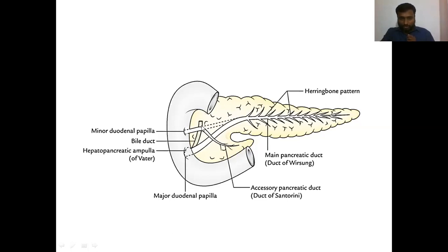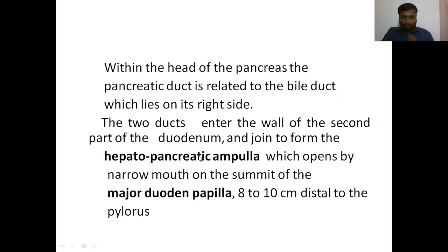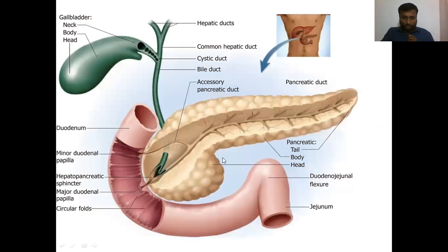At the second part of the duodenum, the main pancreatic duct is in close contact with another duct - the bile duct. These two ducts join together to form a bulging known as the hepatopancreatic ampulla. 'Ampulla' means a bulging, so this bulging is called the hepatopancreatic ampulla.